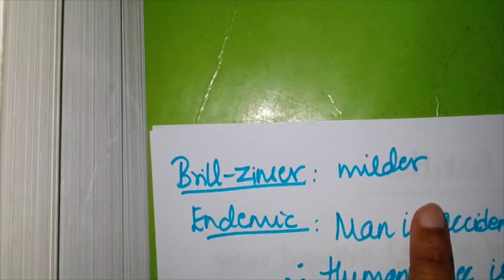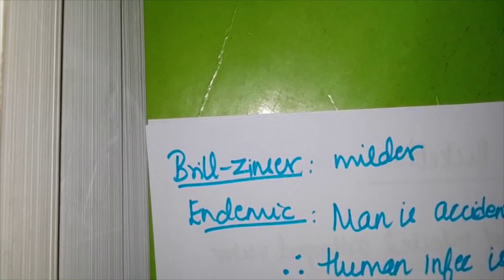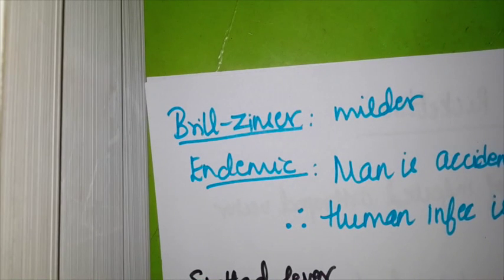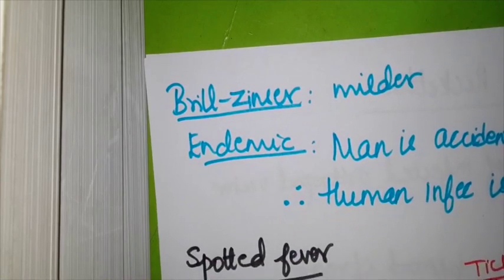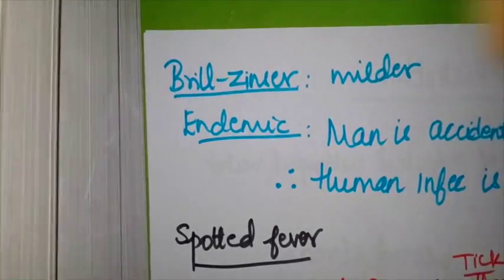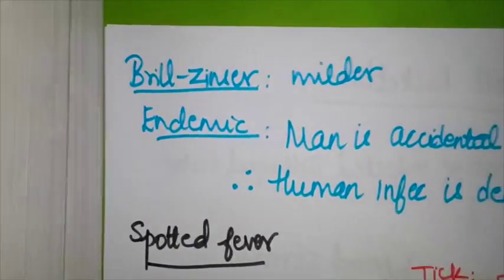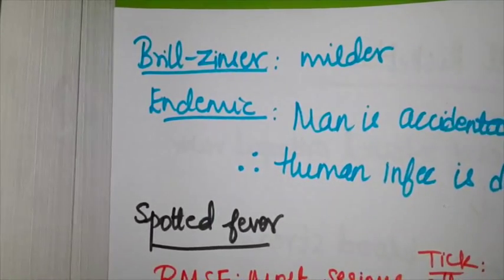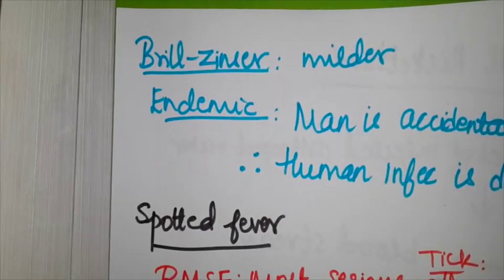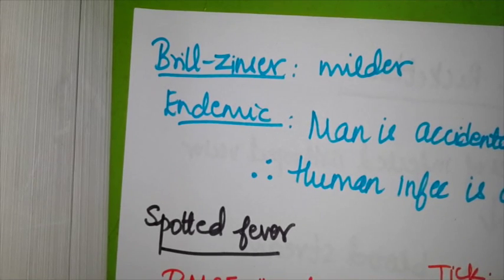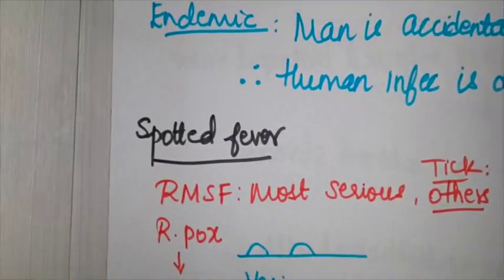Same thing for Brill-Zinsser disease applies, only the clinical features are milder. Now for endemic typhus—it's mainly between the rat and the flea, so man is actually an accidental host. If man is an accidental host, this infection in human beings becomes a dead-end infection. Man-to-man transmission through lice is not possible. Similar symptoms to epidemic typhus, except the symptoms are in the milder form.